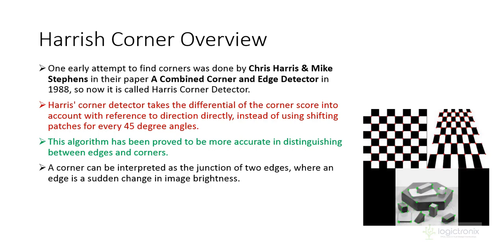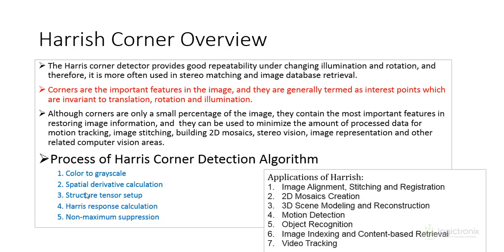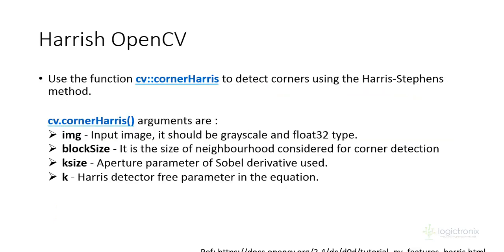The sudden change in brightness is considered as the Harris corner. Here are the steps for the Harris Corner algorithm: color to grayscale conversion, spectral derivative calculation, structural tensor setup, Harris response calculation, and non-maximum suppression. Harris Corner provides necessary image features needed for image translation, rotation, and further processing like stereo vision and image representation. It is a much more effective algorithm than edge detection.